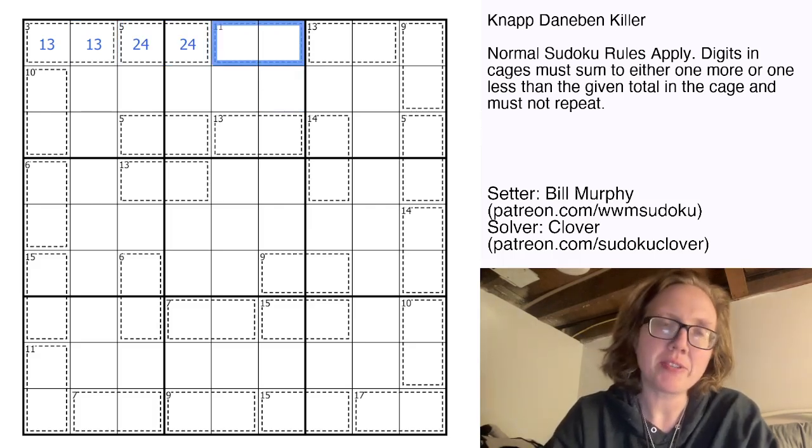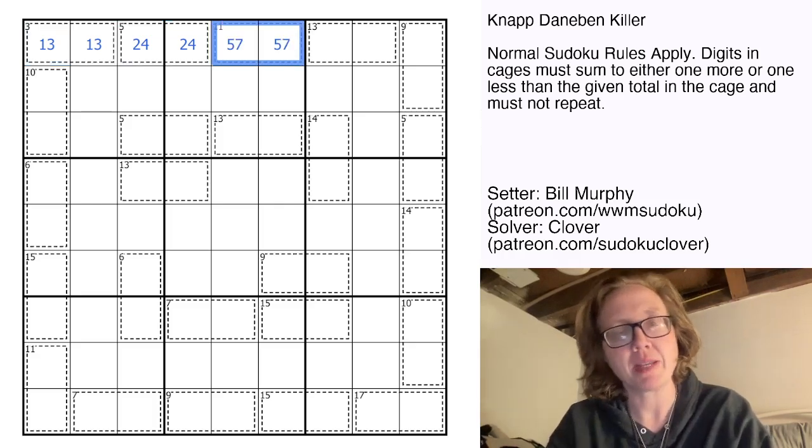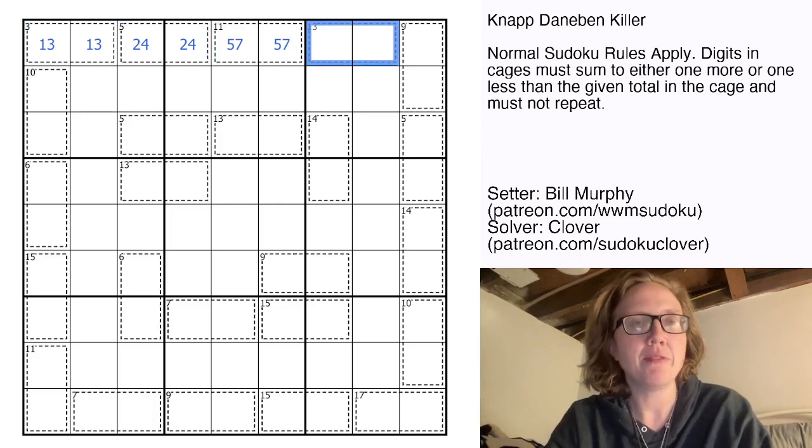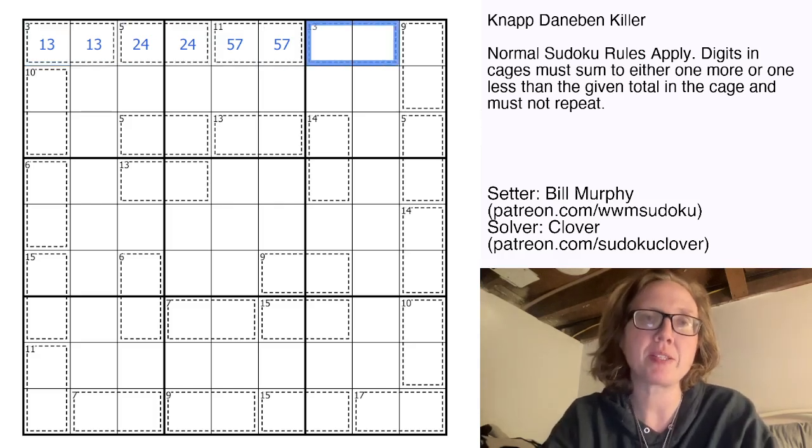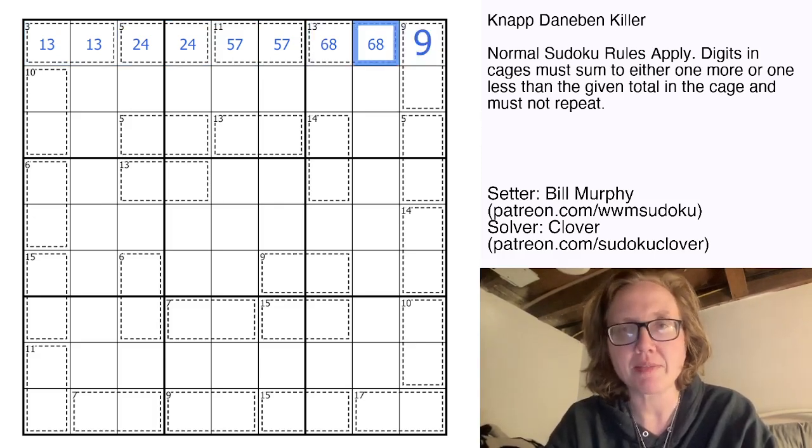Eleven? We can't go down to 10 because we don't have any low digits left. So we have to go up to 12, and the only remaining way to make 12 is five plus seven. Thirteen can't go down one to 12, we've used up all of our low digits. So this has to sum to 14, six plus eight, and that makes this value nine.